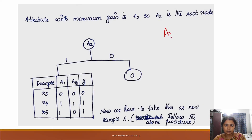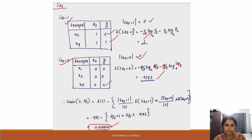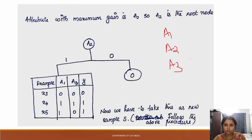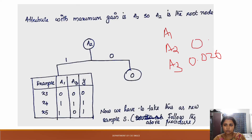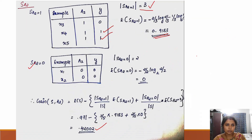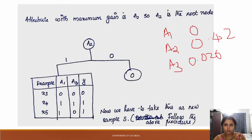Comparing A1, A2, and A3: the gain of A3 is 0.020, the gain of A2 is 0.42, and the gain of A1 is 0.171. Combined, A2 has the highest gain of 0.42, so A2 is selected as the root node. With A2 as the root node, we have two options: either 0 or 1.